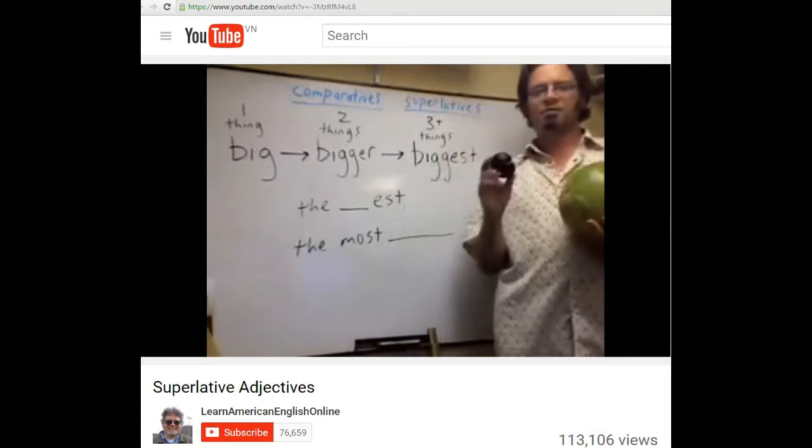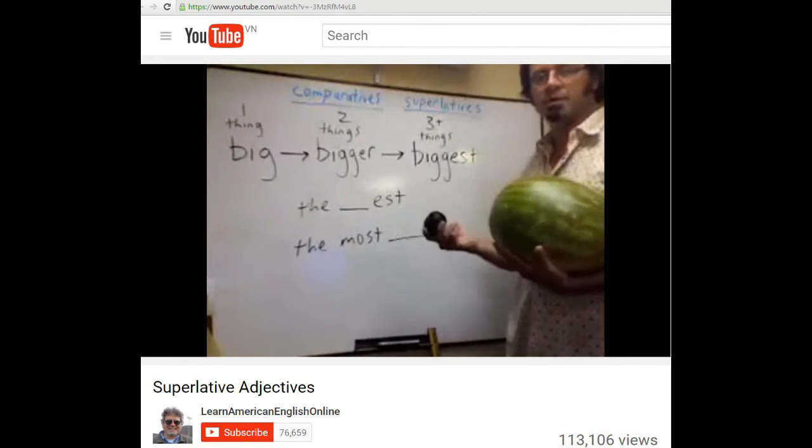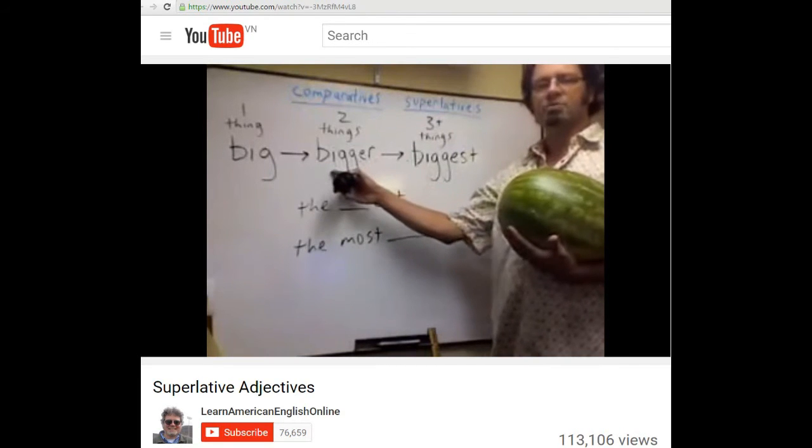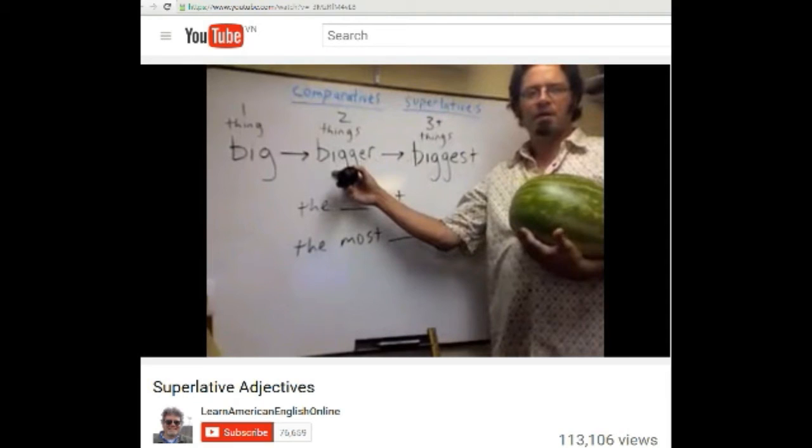And with two things, here's a plum, I can say the watermelon is bigger than the plum. I'm using the comparative form, and I can say the watermelon is bigger than the plum.